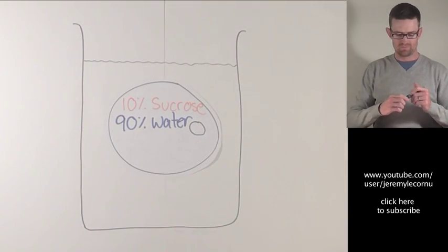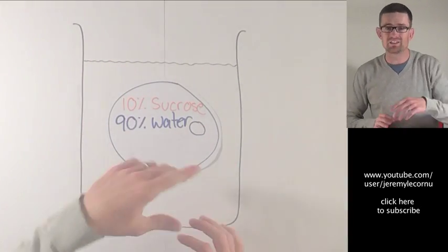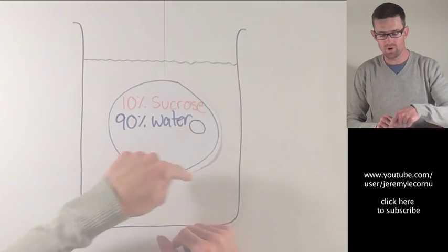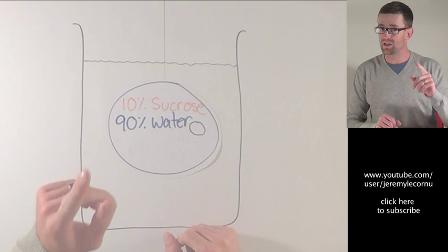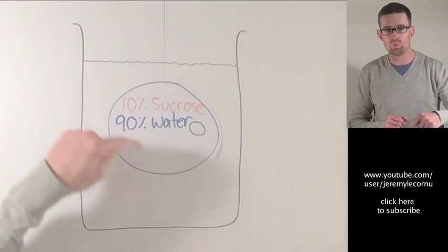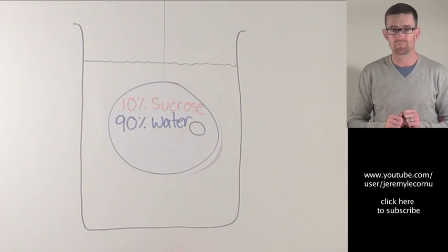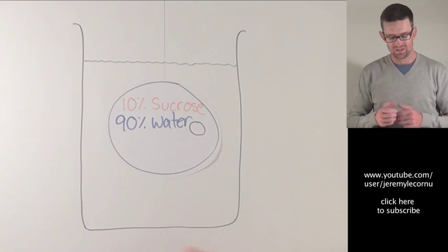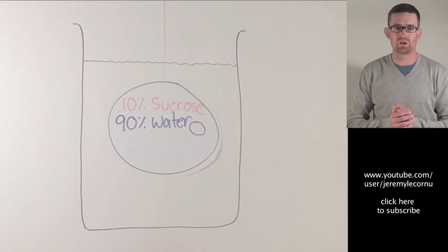Now, one thing I hadn't mentioned at the start: this is an animal cell. We've got no cell wall here, we've just got a semi-permeable cell membrane. Semi-permeable is very important - that means that things like water molecules are able to move across into and out of the cell. We've got our nucleus here, and apart from that I've kept it pretty basic.